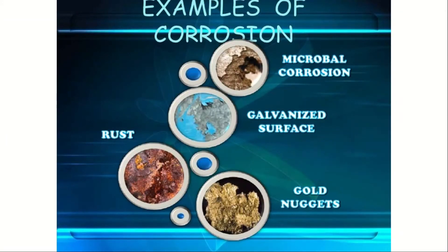Examples of corrosion include microbial corrosion, galvanized corrosion, gold nuggets, and rust. These are the different types of corrosion which happen on the exterior of metals.